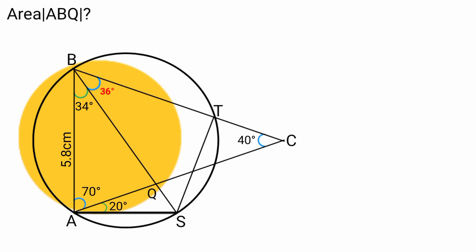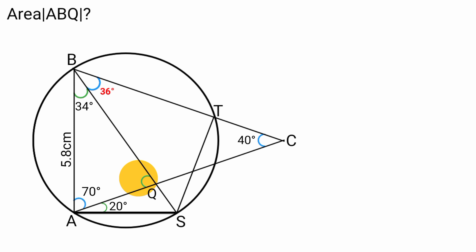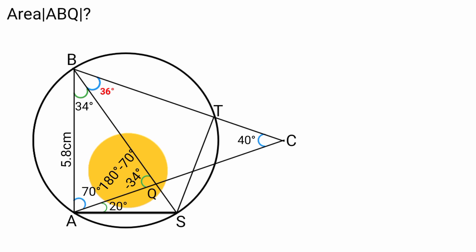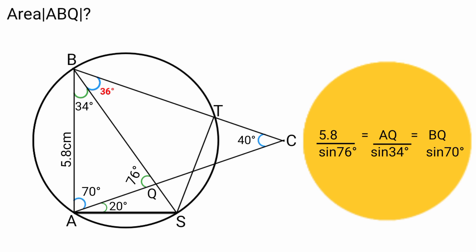Now from triangle ABQ we can find the other two sides using AB equals 5.8 centimeters. To use the sine rule, we need the angles. Since the angles are 70 degrees, 34 degrees, and the third angle equals 180 minus 70 minus 34 equals 76 degrees. Using the sine rule: 5.8 over sin(76°) equals AQ over sin(34°) equals BQ over sin(70°).